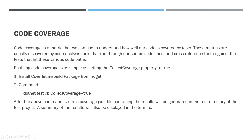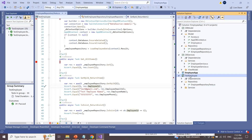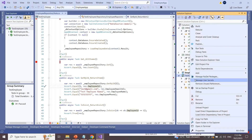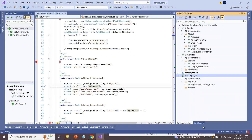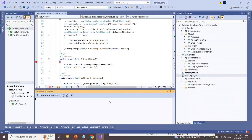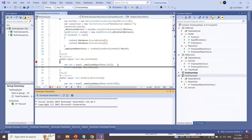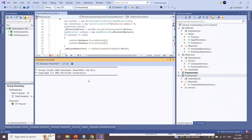After the command is run, a coverage JSON file containing the results will be generated in the root directory of the test project. A summary of the results will also be displayed in the terminal.